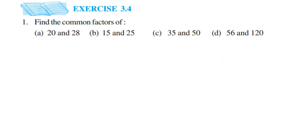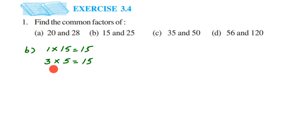The second question: we have 15 and 25. For 15: 1 × 15 = 15; it doesn't go in the 2 table; it goes in the 3 table — 3 × 5 = 15; after 3, it goes in the 5 table, but since we've already written 3 × 5, that's the same as 5 × 3, so we don't write it again. After 5, it doesn't go in any other table up to 10. Factors of 15 are 1, 3, 5, and 15.